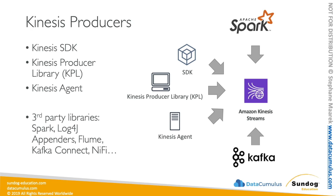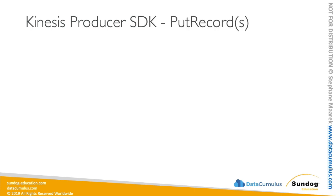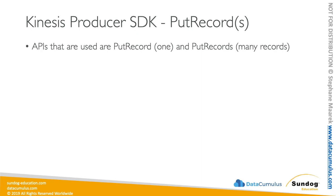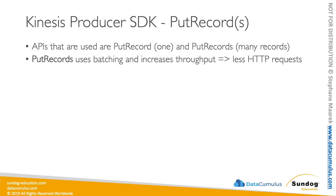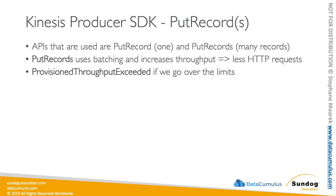Kinesis streams can have different ways of getting data from various sources. The first method is the producer SDK, which uses the put record or put records API. With put record you send one record; with put records you send many records. Put records uses batching, increasing throughput by sending many records in one HTTP request. If you exceed your throughput, you will get a ProvisionedThroughputExceeded exception.